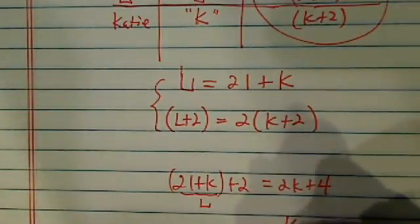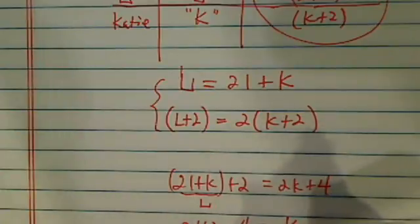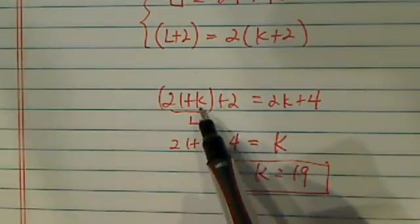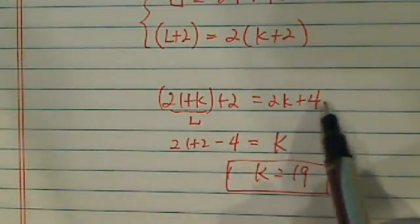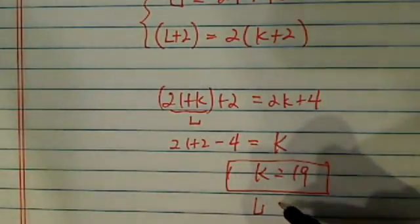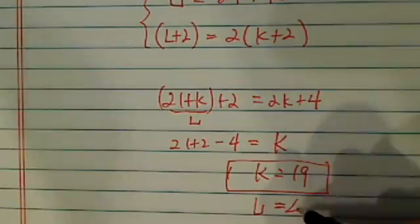Move the K over, you have K is equal to 21 plus 2 minus 4. So K is equal to 19. Let's write it over here. So what I did is I moved K over, and then moved 4 over. So K is 19. If K is 19, current age for L would be 19 plus 21, that's 40.